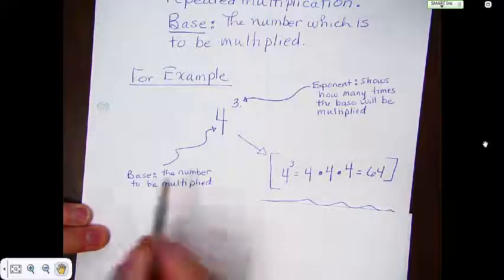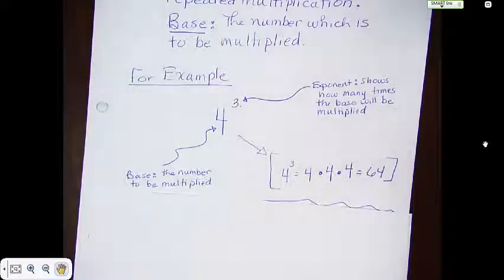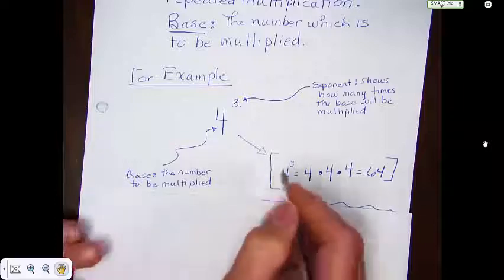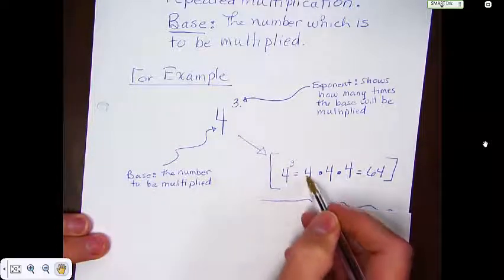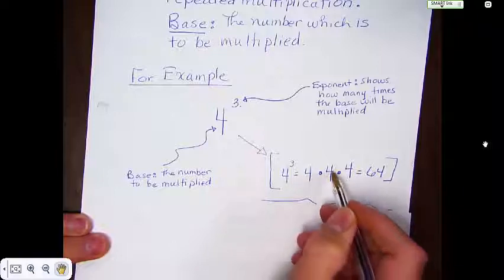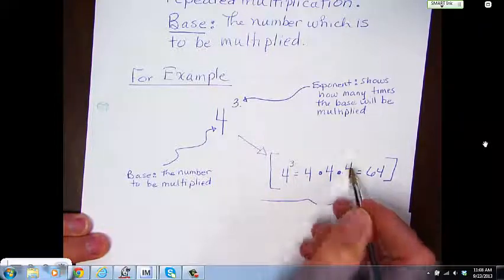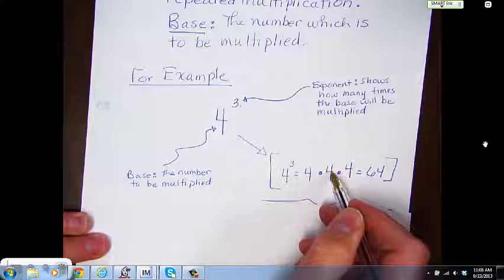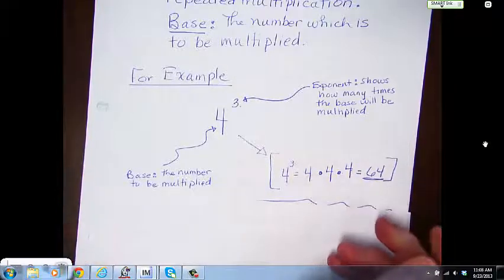If you go ahead and operate on this like one normally would, you would take 4 raised to the third power — or 4 cubed — which equals 4 times 4 times 4. 4 times 4 is 16, and you take that times 4 again and get 64.